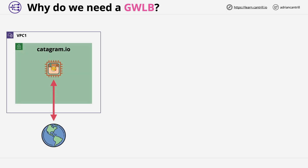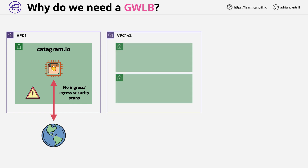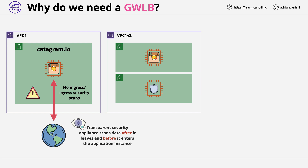Before we talk about gateway load balancers, I want to step through the type of situation where you might choose to use one. Consider this architecture: the catagram application server in a public subnet communicating with the public internet. What's missing here is some kind of inspection-based security appliance — something which can check data for any exploits to protect our application server. We can improve the architecture by adding a transparent security device that sits in the flow of traffic, inbound and outbound, transparently reviewing traffic as it enters the application from the public internet, protecting it against known exploits, and filtering traffic on the way back out — for example, detecting and preventing information leakage.